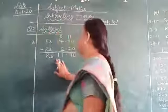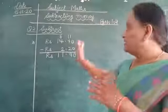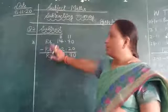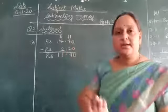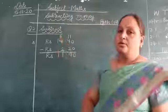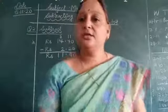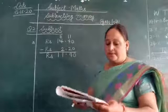3 minus 2 is 1 and 1 minus 1 is 0. So the answer is rupees 11.90. As it is, whatever answer comes, that's the answer.